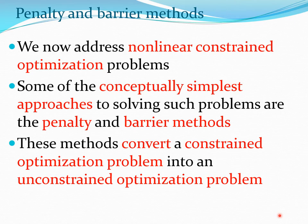We are going to look at non-linear constraint optimization problems. In the last few lectures we looked at linear programming problems, which are essentially linear constraint optimization problems. Some of the simplest methods we can come up with to solve constraint optimization problems are the penalty and barrier methods, which basically convert a constrained optimization problem into an unconstrained optimization problem.